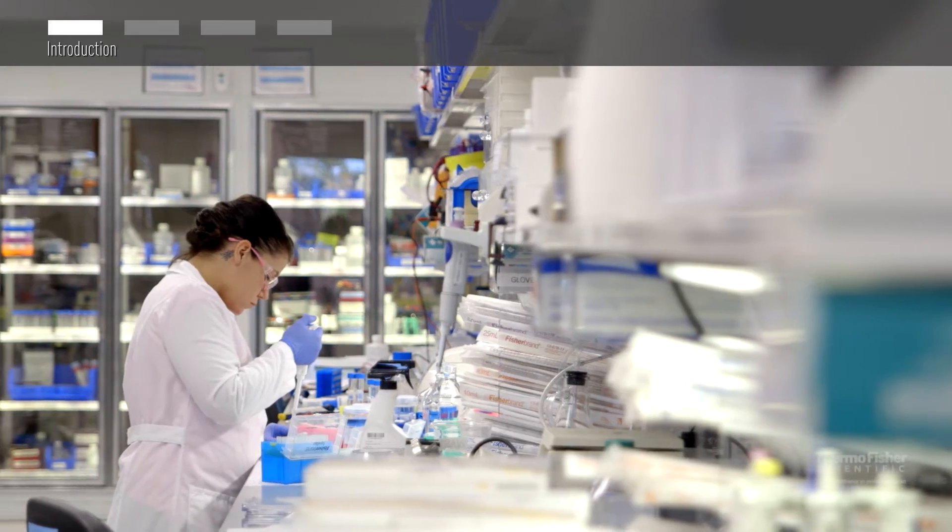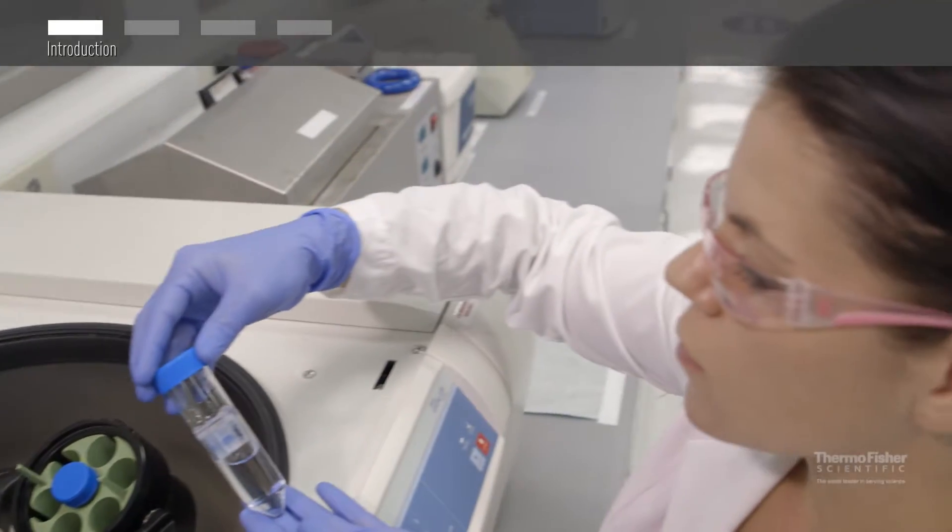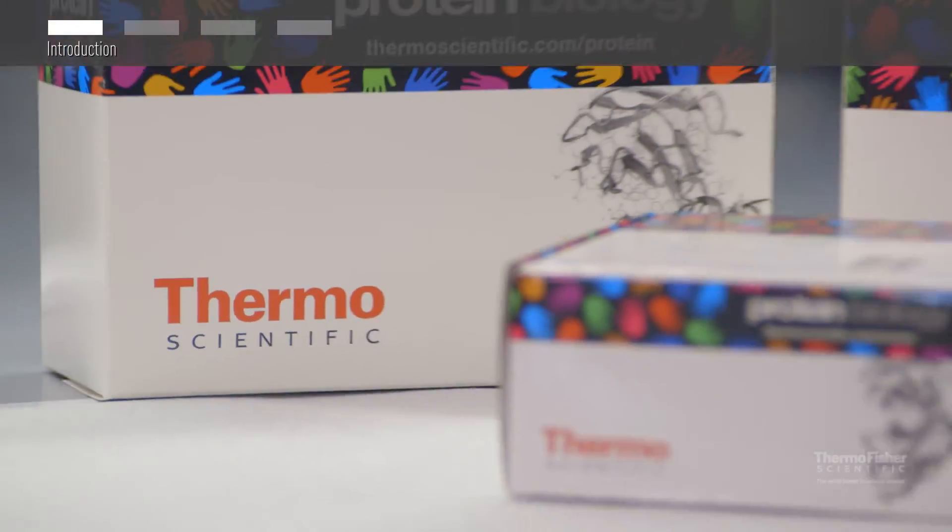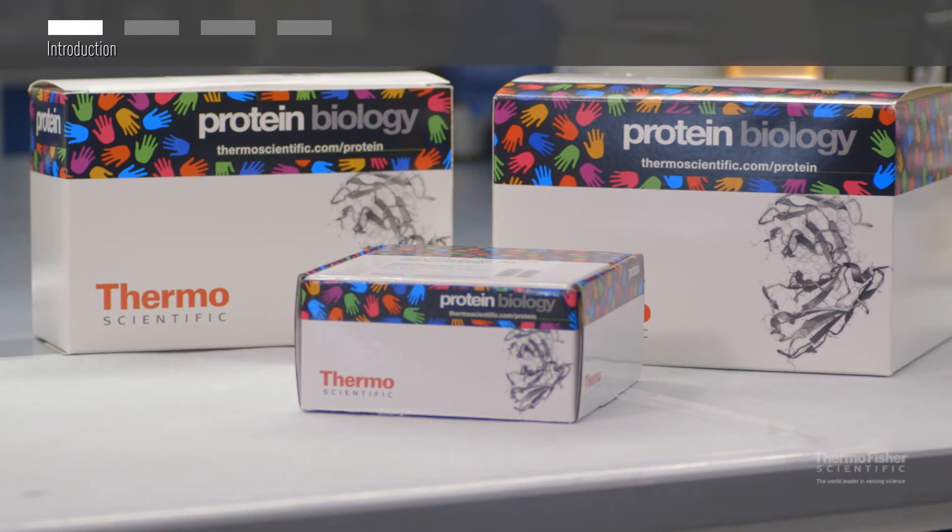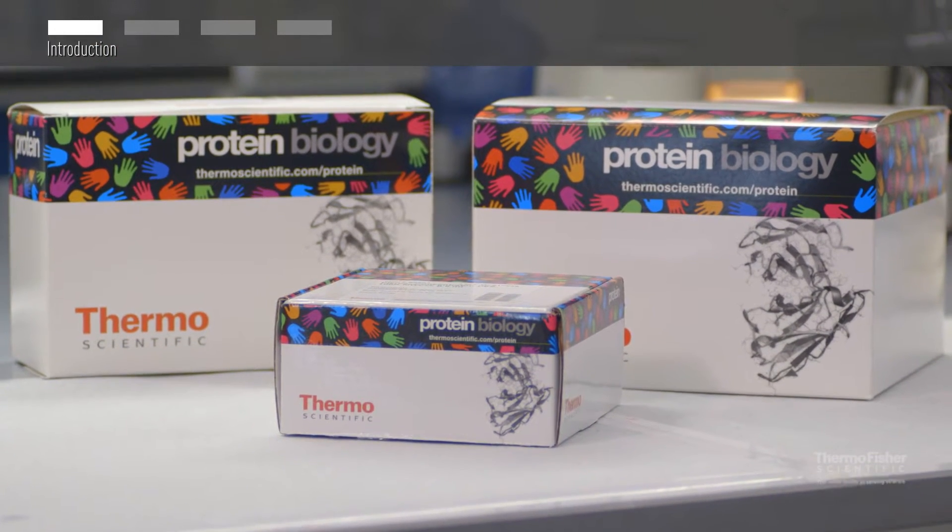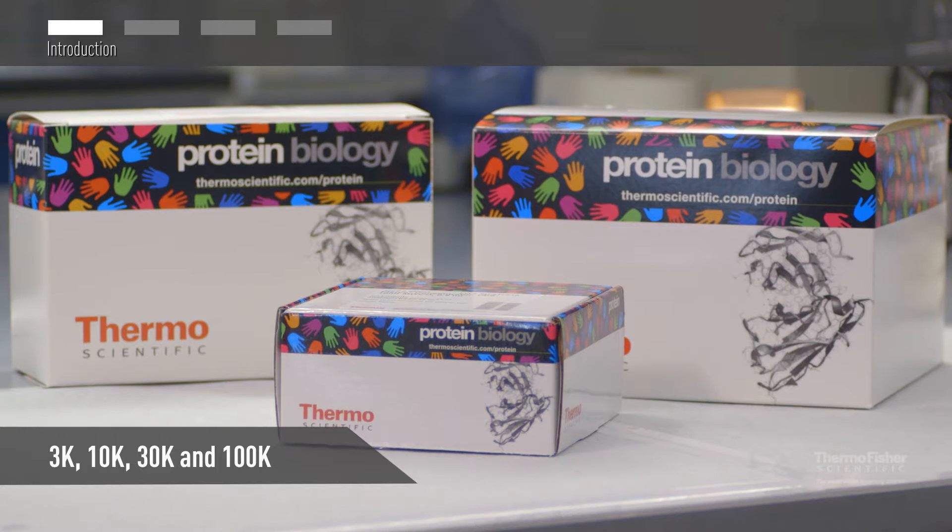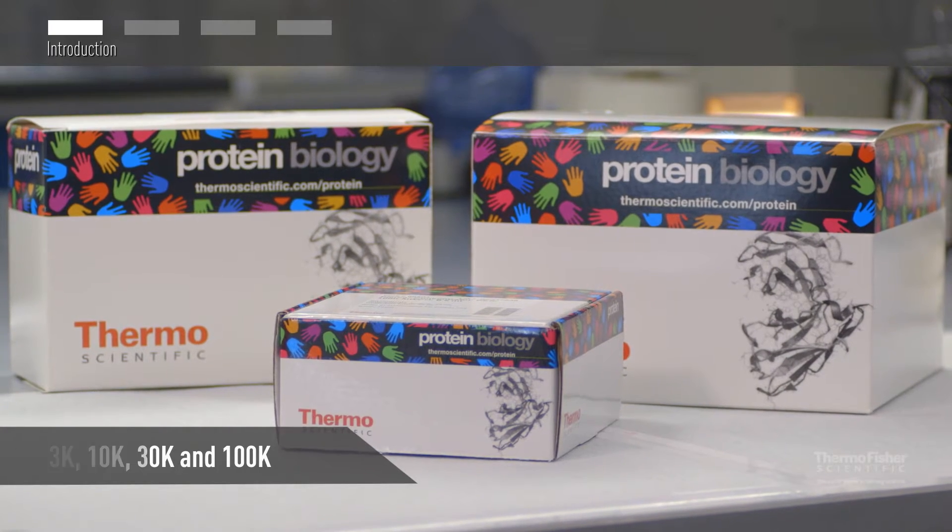These disposable devices are conveniently used in a benchtop centrifuge. They contain polyethersulfone or PES membrane in a variety of molecular weight cutoffs including 3K, 10K, 30K, and 100K.